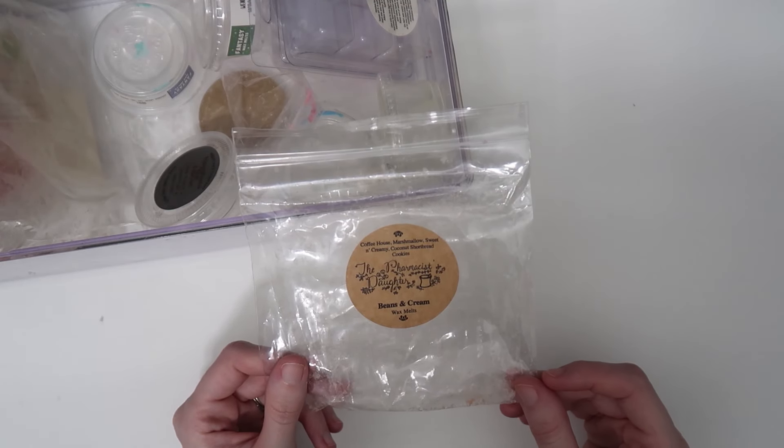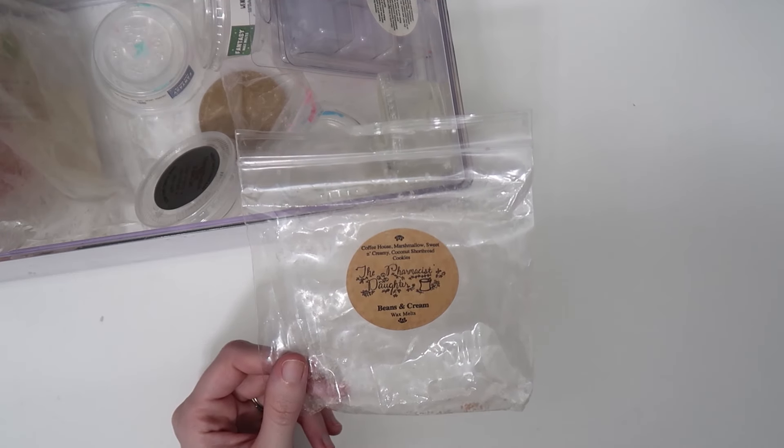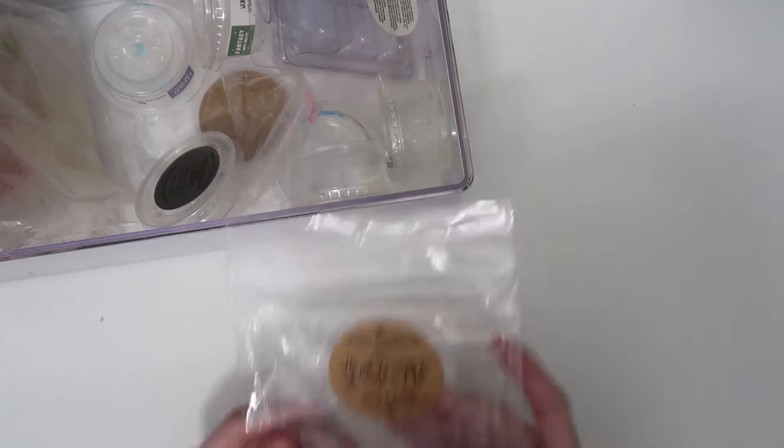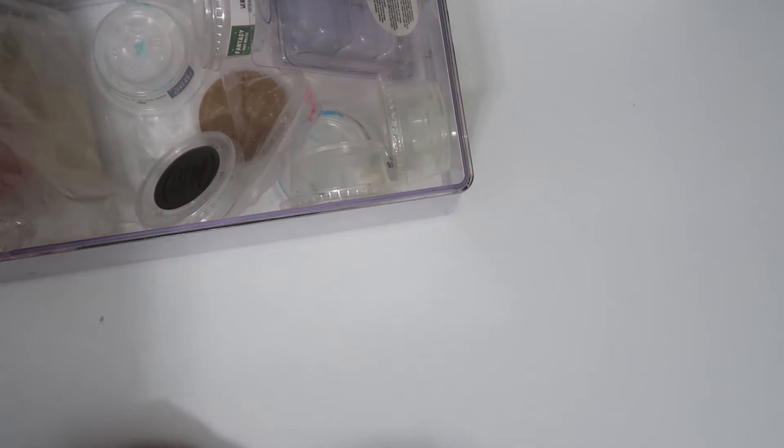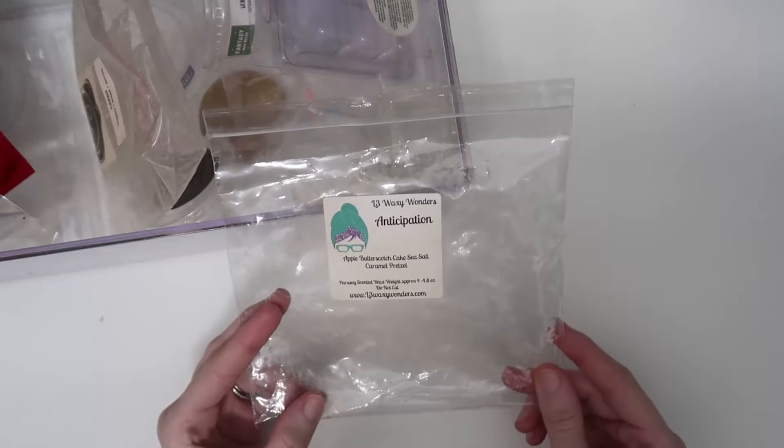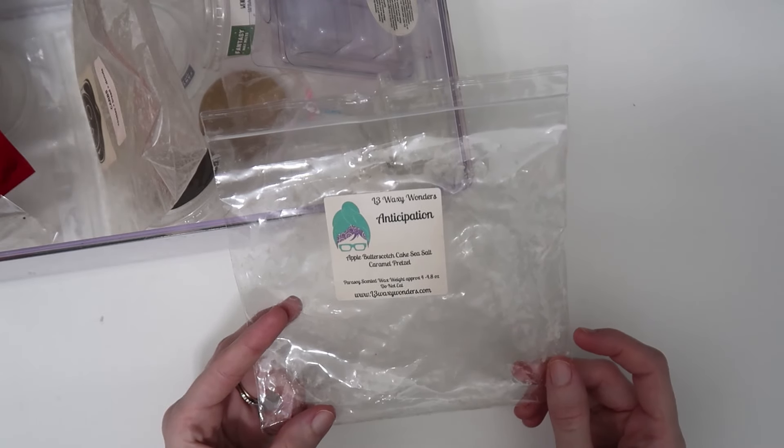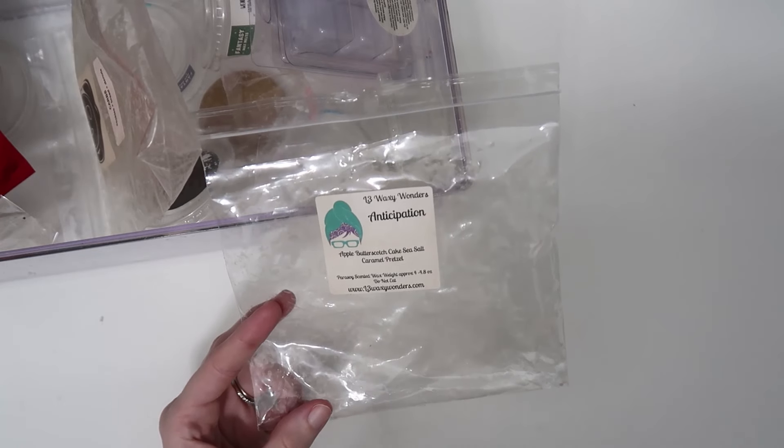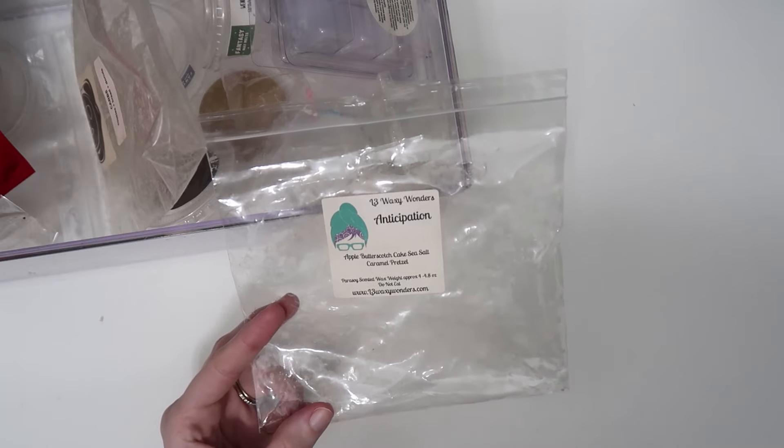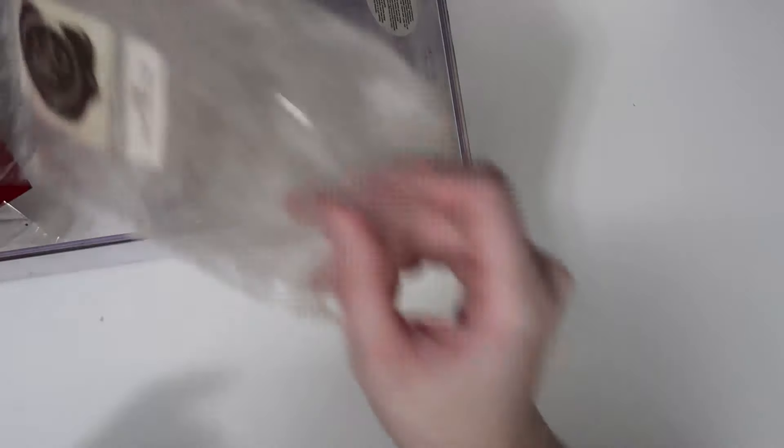This was really good also from The Pharmacist Daughter - Beans and Cream - coffee house, marshmallow, sweet and creamy coconut, shortbread cookies. I melted this almost exclusively in our entryway and it smelled so good. Every morning was just like fresh coffee as I was coming down the stairs. I love their coffee blends and that was no exception. Another from L3 is Anticipation - apple butterscotch cake, sea salt caramel, and pretzel. This was so good, like chef's kiss. It was so freaking good, I was obsessed with that.